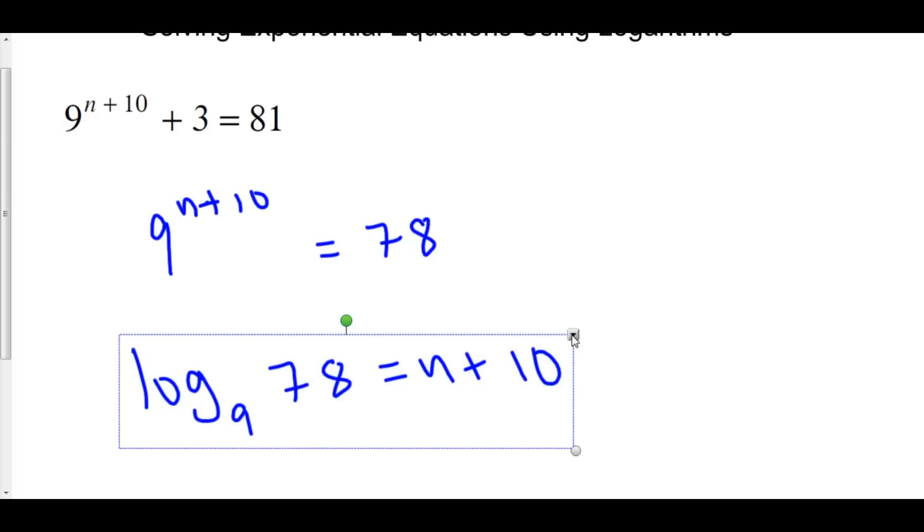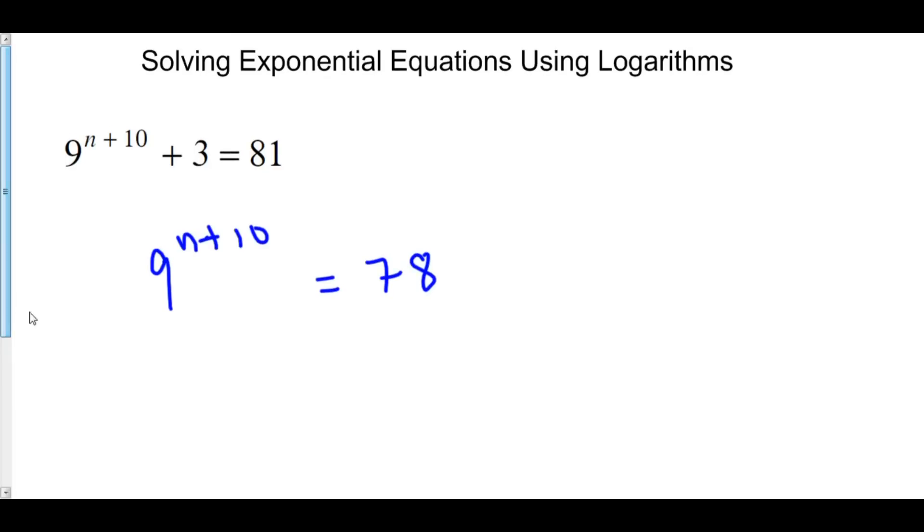Instead, we can use natural log because everyone's scientific or graphing calculator has that function in it. We can take the natural log of both sides. So we have the natural log of 9 to the n plus 10 is equal to the natural log of 78.